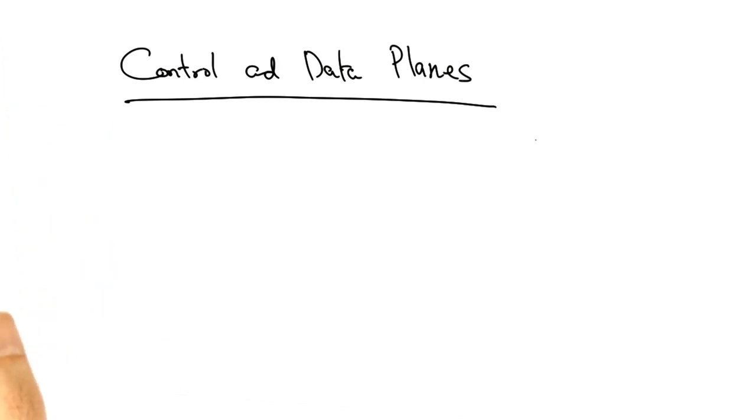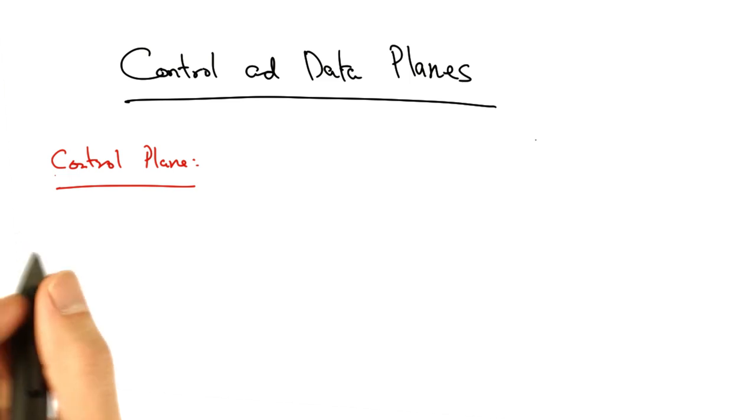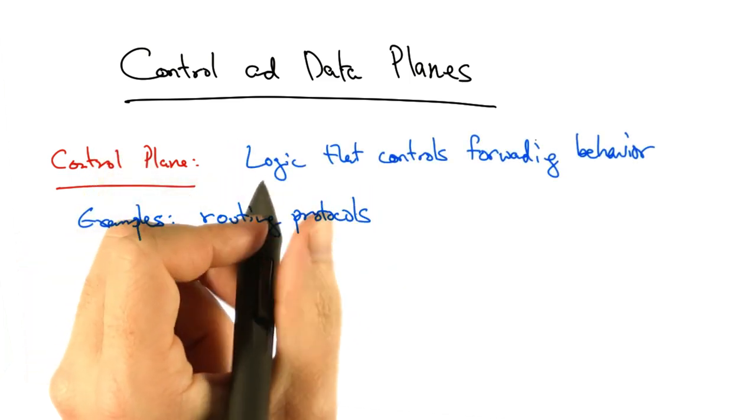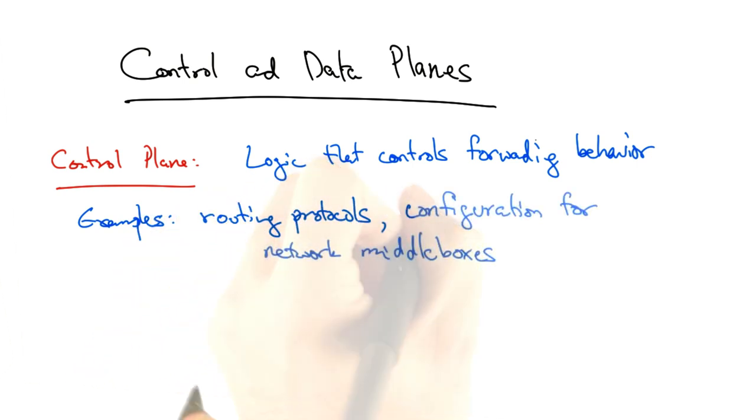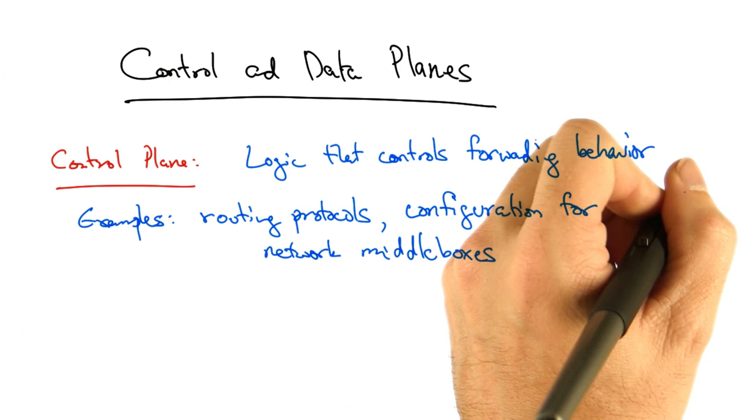Let's quickly review the difference between the control plane and the data plane. The control plane is the logic that controls forwarding behavior. Examples of control plane functions include routing protocols, as well as logic for configuring network middle boxes.